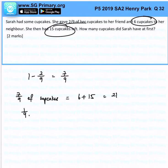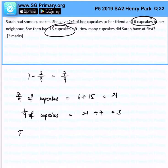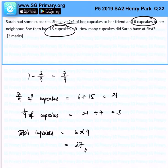So 1 over 9 of the cupcakes equals 21 divided by 7, and that is 3. Therefore, the total cupcakes would be 3 times 9, and that will give me 27. That is the answer for this question.